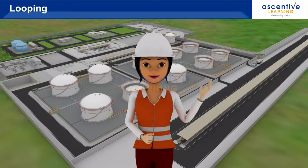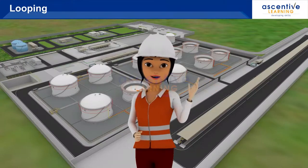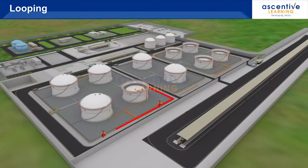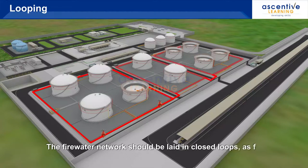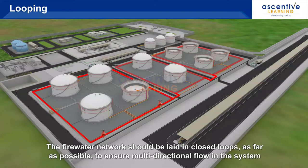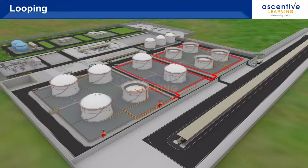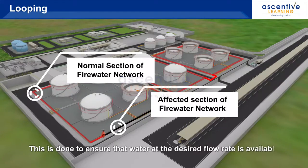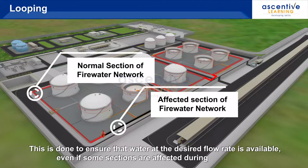Let us learn about the important points while designing a fire hydrant network. The fire water network should be laid in closed loops as far as possible to ensure multi-directional flow in the system. This is done to ensure that water at the desired flow rate is available even if some sections are affected during the incident.